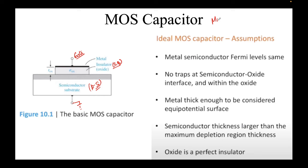When discussing the MOS capacitor (moscap), we made certain assumptions. First, regarding Fermi levels: in metals, the Fermi level is the level up to which electrons are filled. In semiconductors it's an analytical construct, but essentially a reference to the vacuum level. Second, in an ideal moscap there are no traps at the semiconductor-oxide interface — the most important interface, where all the action happens.